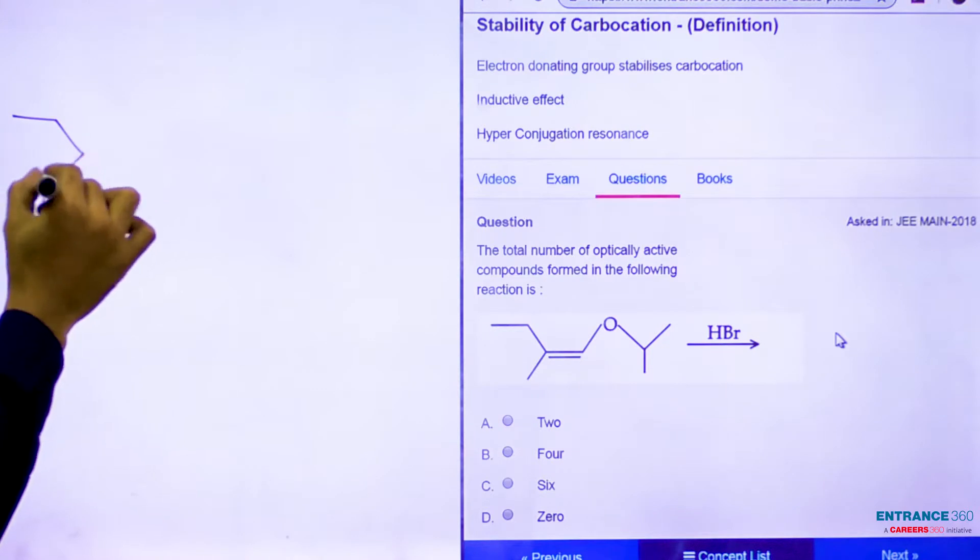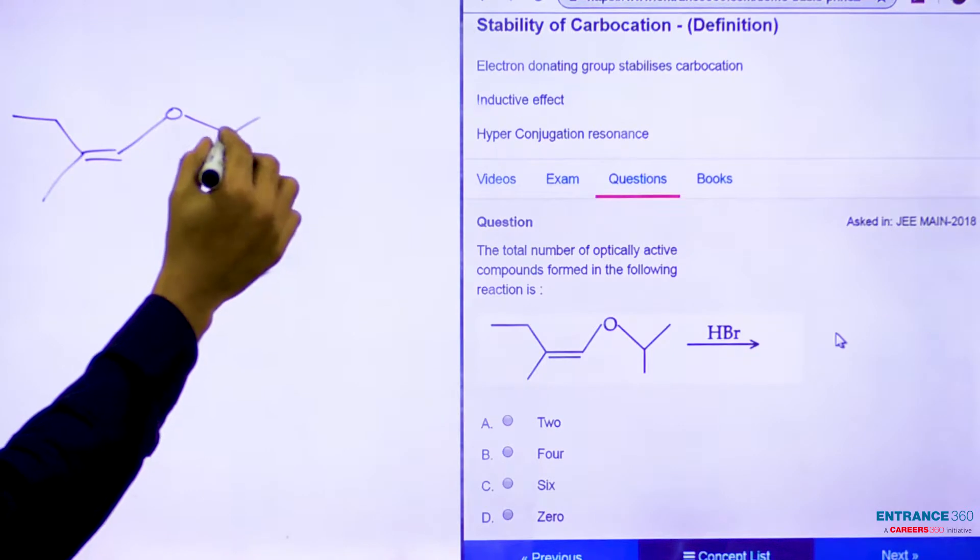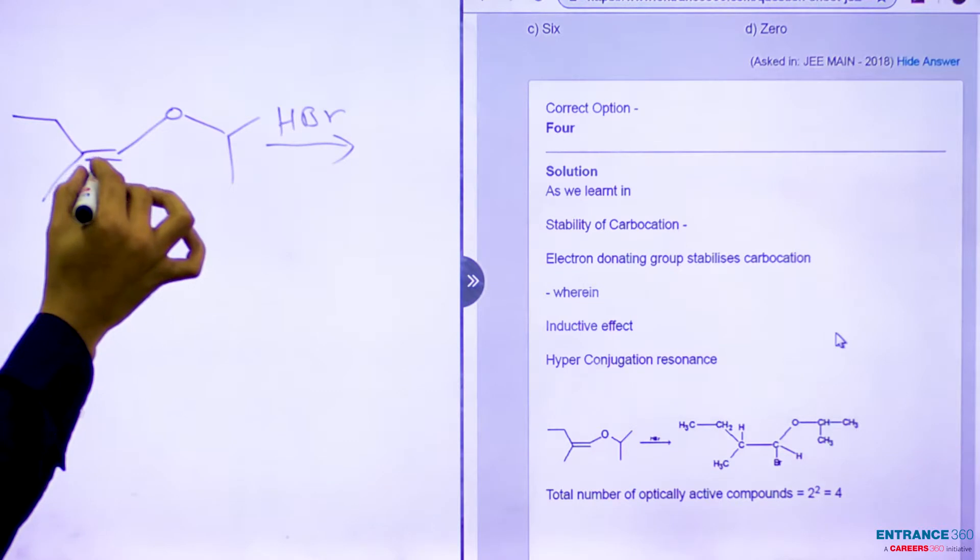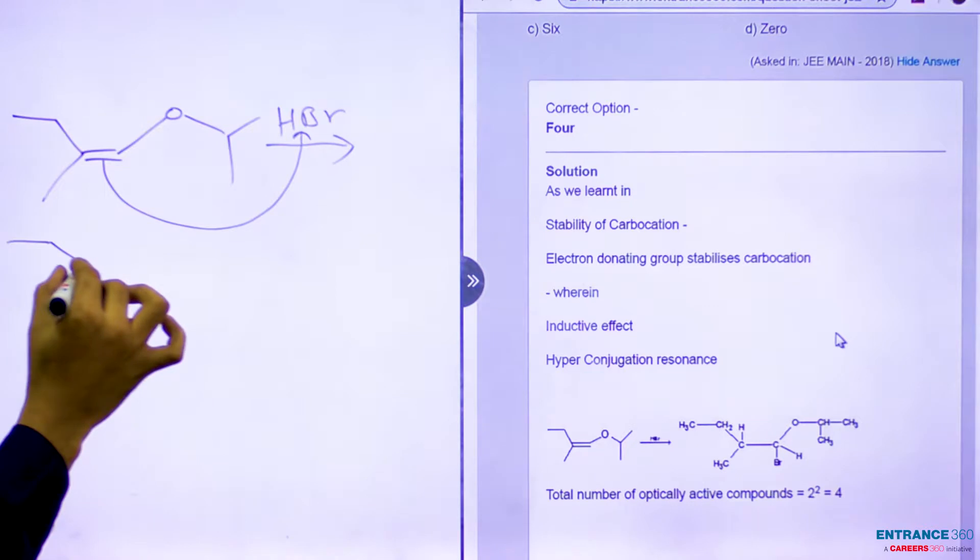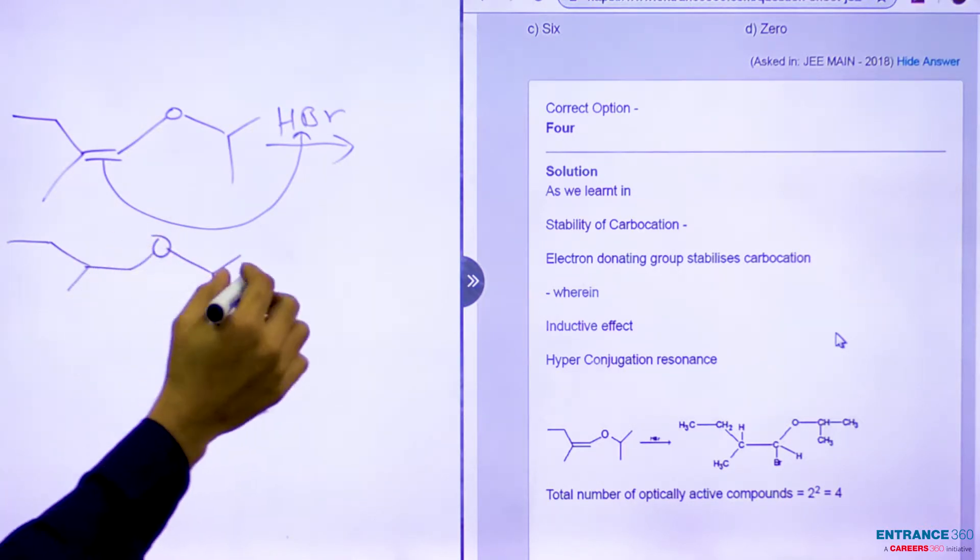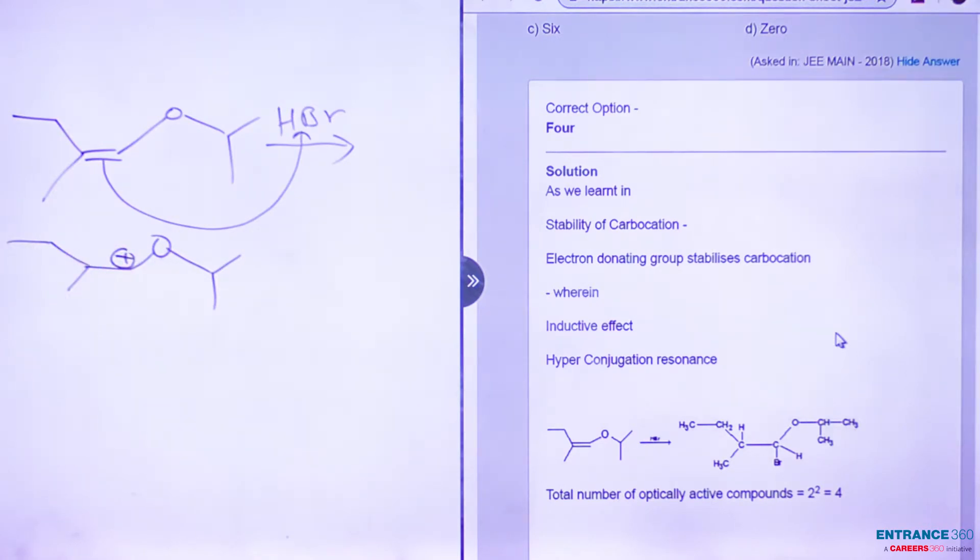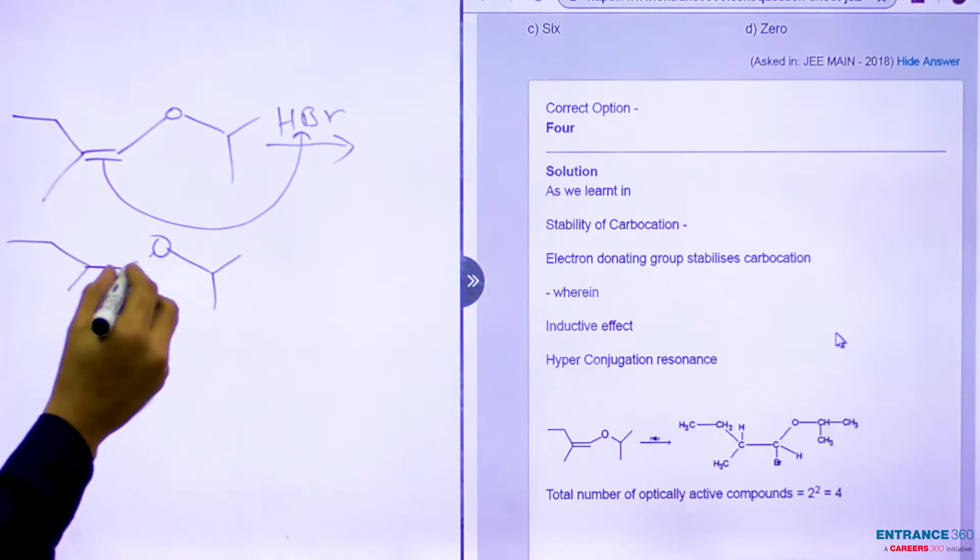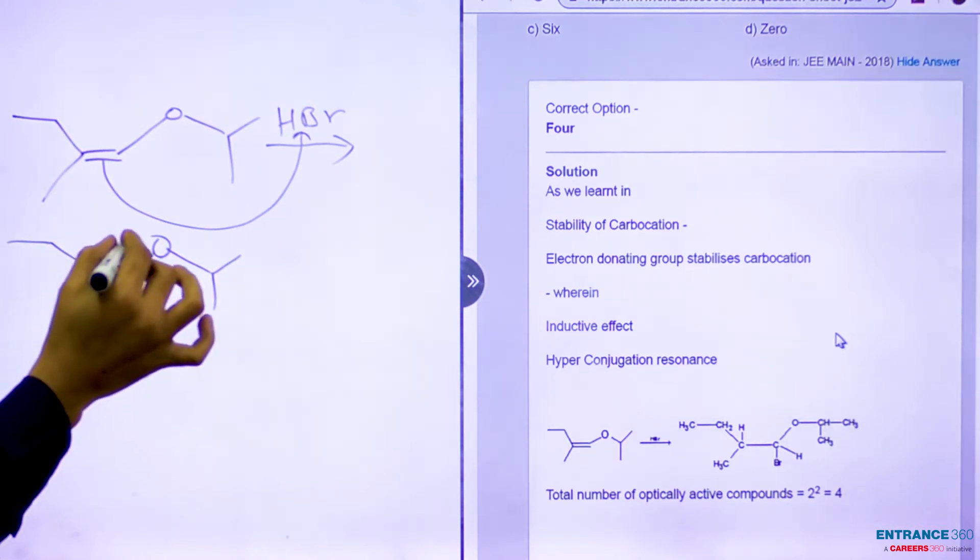We have a reactant with an alkene and ether group reacting with HBr. This pi bond will attack here and it will make a carbocation. Suppose the carbocation is here.